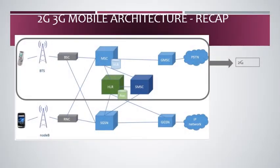Welcome to the introduction of Radio Access Network, RAN. Let's recap from the previous session. In the 2G/3G mobile architecture, when a mobile is making a call, it first reaches the base station transceiver through the air interface. The call from BTS is processed and goes to the base station controller, then the mobile switching center, and so on to the PSTN.